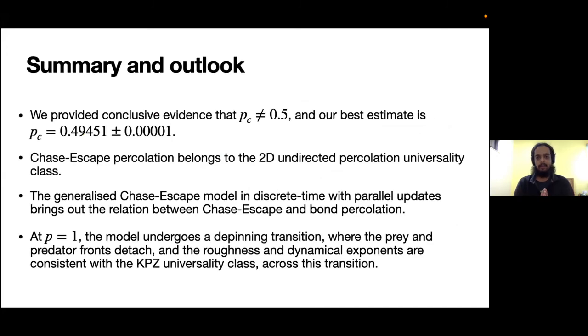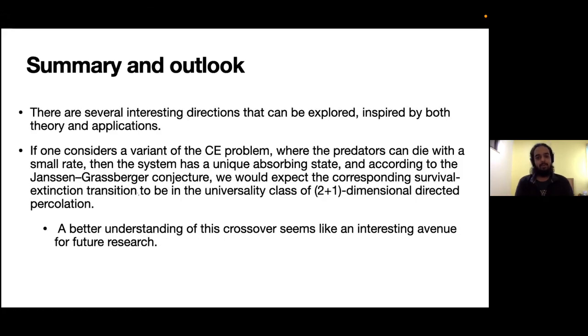With this I would like to conclude. Just to recap: the first thing that we showed was pc was not equal to 0.5, and we gave our estimate of pc to five decimal places. However, we showed that despite this being ruled out as equal to 0.5, Chase-Escape belongs to the 2D undirected percolation universality class. Through the generalized two-parameter model we were able to justify why this is the case, and we pointed out that another transition happens at p equal to one, which is a depinning transition that has not been mentioned much.